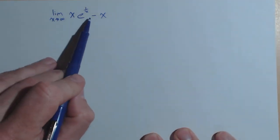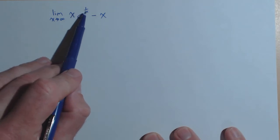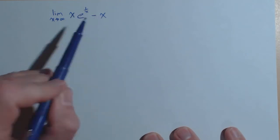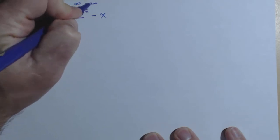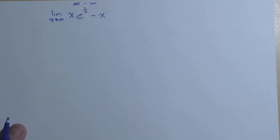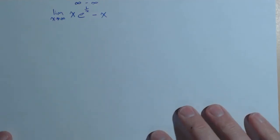Now as x goes to infinity, if we tried a direct substitution, we'd have infinity e to the zero is one minus infinity, so currently this is an infinity minus infinity case telling us this is game for L'Hopital's rule, but we are going to have to rewrite it.